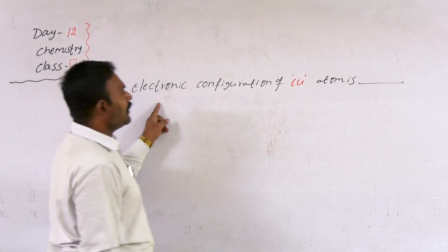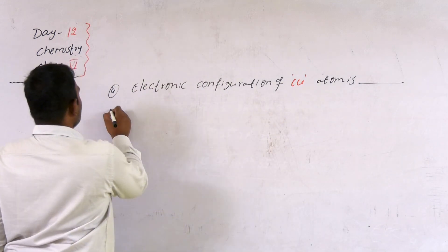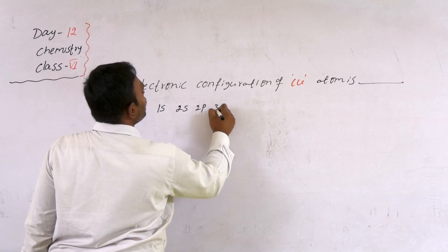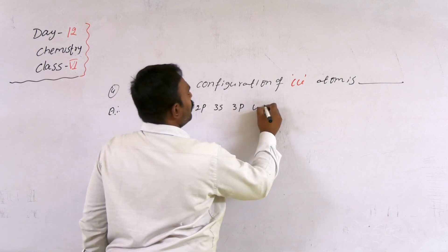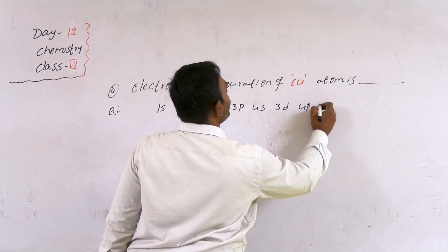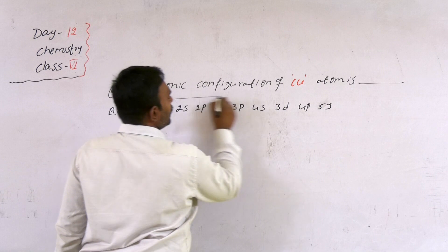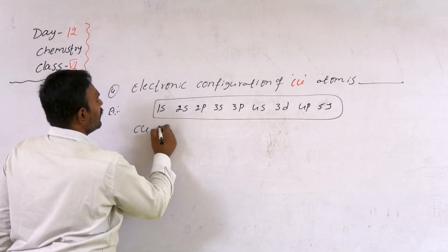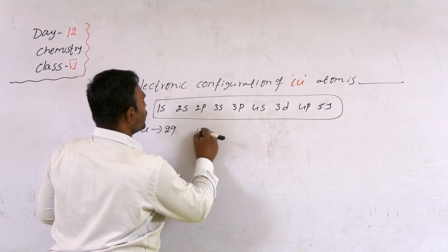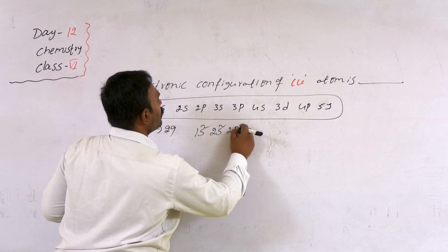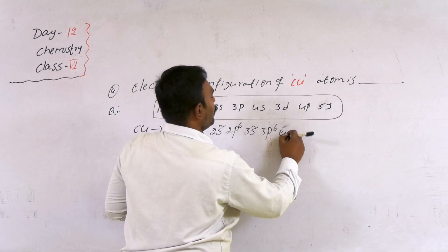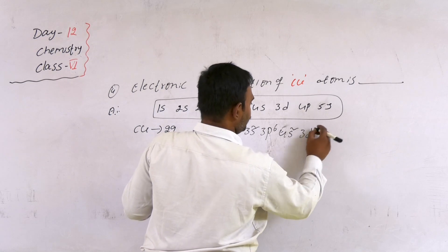The electronic configuration of copper, atomic number 29, which has 29 electrons. Using the filling sequence — 1s, 2s, 2p, 3s, 3p, 4s, 3d — the expected configuration is 1s2, 2s2, 2p6, 3s2, 3p6, 4s2, 3d9.